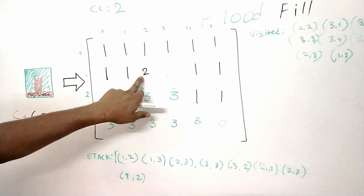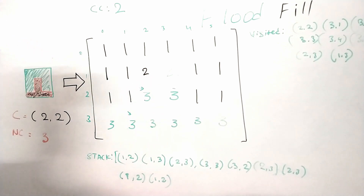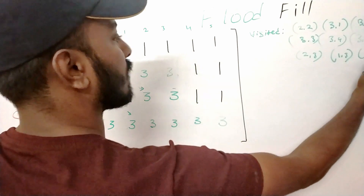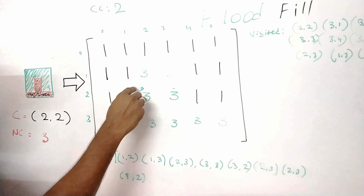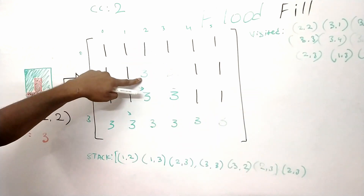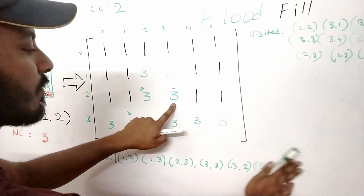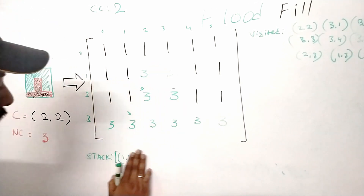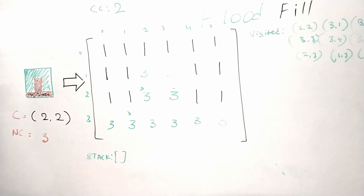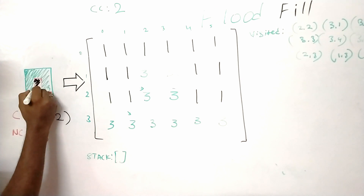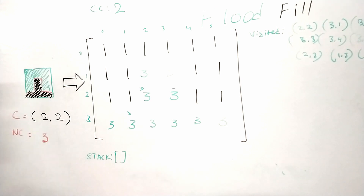We go to one comma three, replace it, add it to visited, and find valid neighbor one comma two. We go to one comma two, replace it, add it to visited. Now checking the remaining stack items — one comma two, two comma three, three comma two, three comma three — they are all already visited, so nothing more to do. The stack is empty, meaning the flood fill is done and the color has been fully replaced.